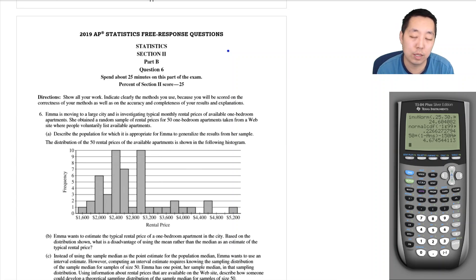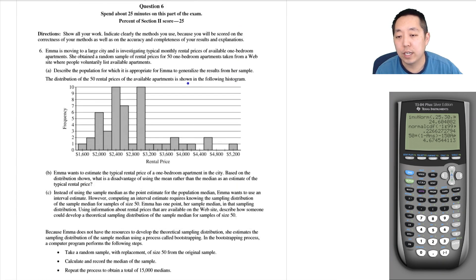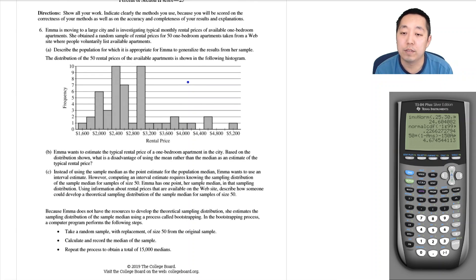Emma is moving to a large city and investigating typical monthly rental prices for available one bedroom apartments. She obtained a random sample of rental prices for 51 one-bedroom apartments taken from a website where people voluntarily list available apartments. To describe the population for which it is appropriate for Emma to generalize the results from her sample...